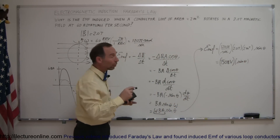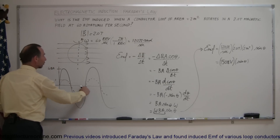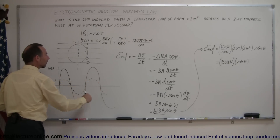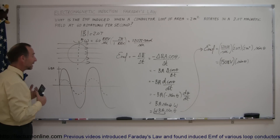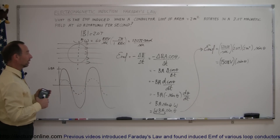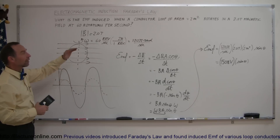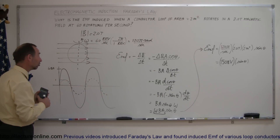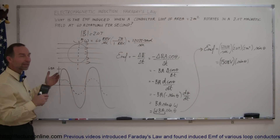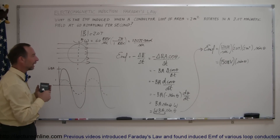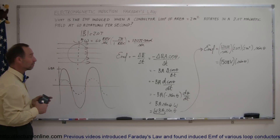As the loop is rotating, the EMF induced goes up to 1,508 volts, back to zero, to minus 1,508 volts, to zero, and so on. This is actually an alternating voltage source — the kind of voltage we get out of our outlets at home or at school. Anytime we plug in an appliance we get a varying EMF, and you can begin to see the relationship between what we've just derived and how electricity is produced at a power plant.